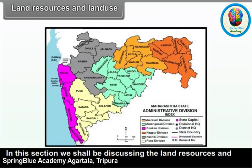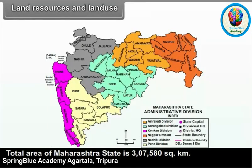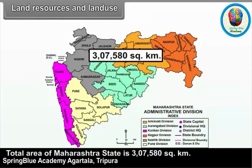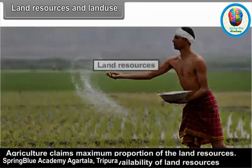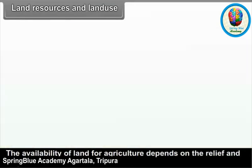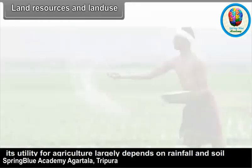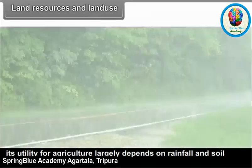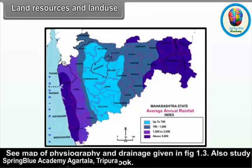In this section, we shall be discussing the land resources and land use in Maharashtra. The total area of Maharashtra state is 3,07,580 square kilometers. Agriculture claims maximum proportion of the land resources. The availability of land for agriculture depends on the relief and slope of the land, and its utility for agriculture largely depends on rainfall and soil conditions. See the map of physiography and drainage given in figure 1.3, and also study the rainfall map given in this book.